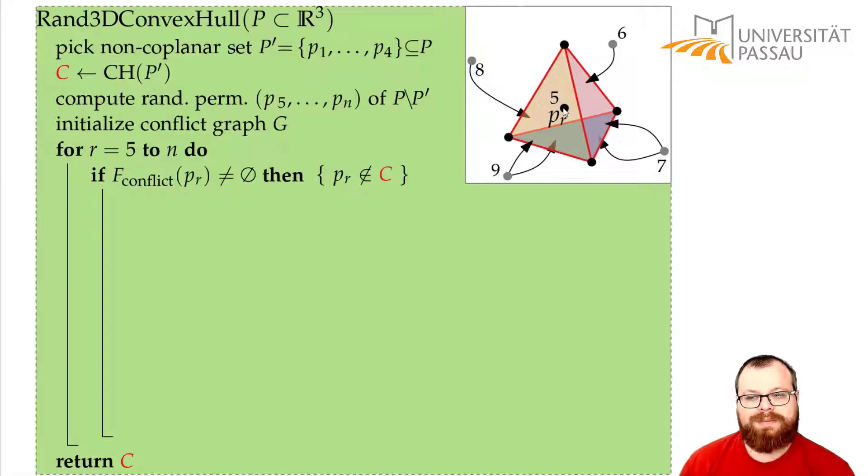And to figure out if a point lies in the convex hull, we can look at the conflict graph. If the number of conflicts of this point is zero, it doesn't see any face, then it's inside the convex hull and we're done.